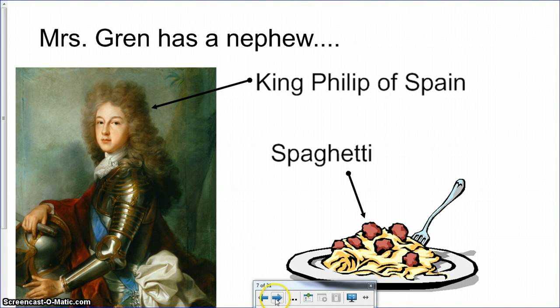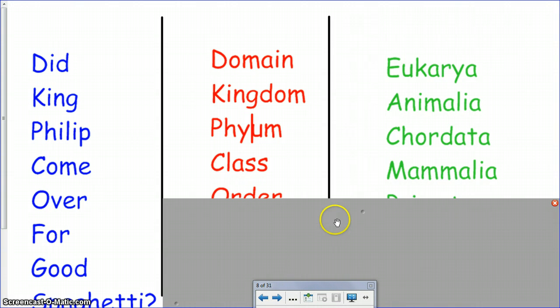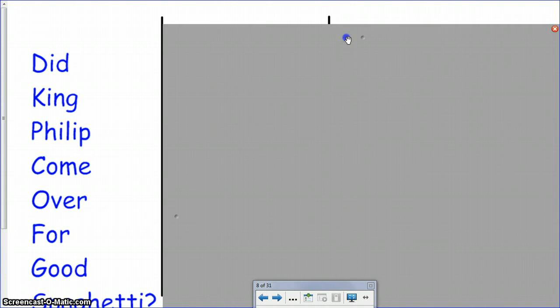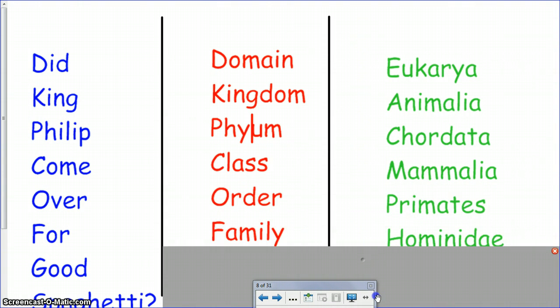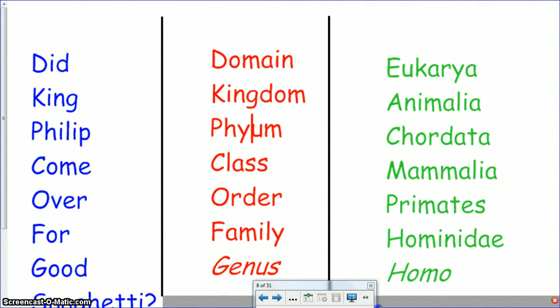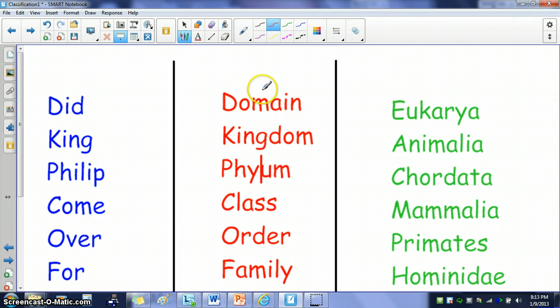He likes spaghetti. So we can use the mnemonic, did King Philip come over for good spaghetti? And that helps us to remember the seven taxa. Now on here we have eight and the reason why we have eight is because I've included domain as the top one.